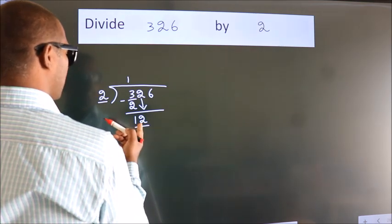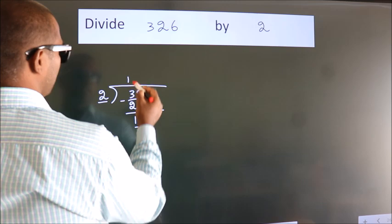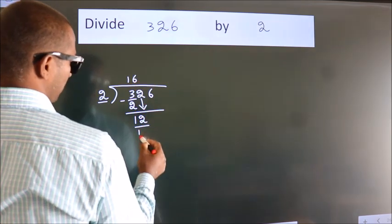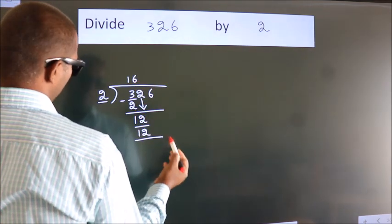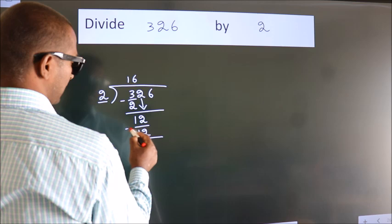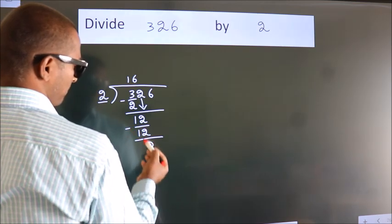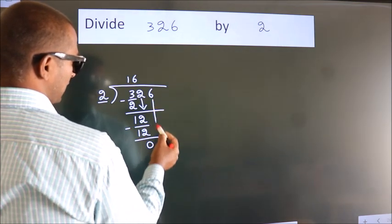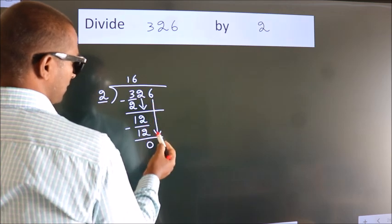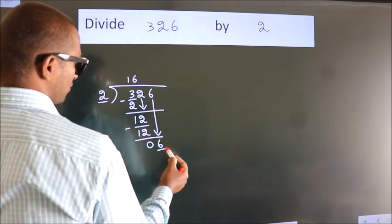When do we get 12? In the 2 table, 2 sixes are 12. Now we subtract. We get 0. After this, bring down the next number. 6 down, so 6.